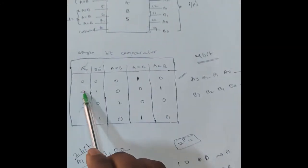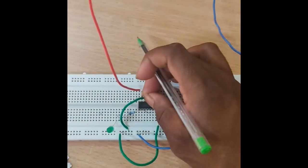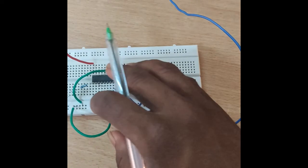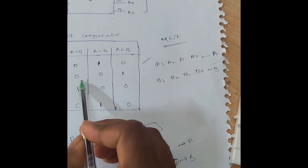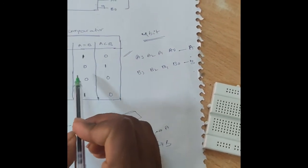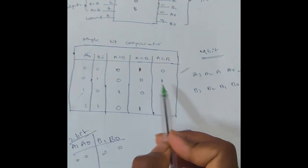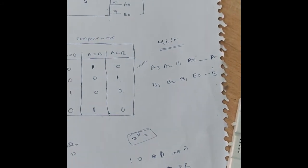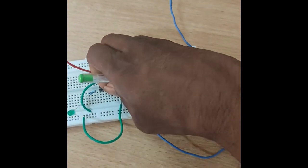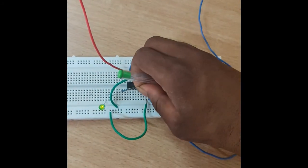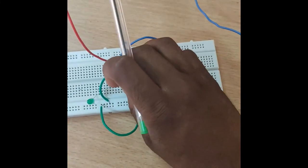Next, A0 is 0 and B0 is 1. In this condition, A less than B is 1 and the remaining outputs are 0. A less than B is on pin number 7, so placing the probe at pin 7 confirms the output is 1.